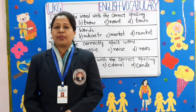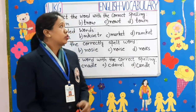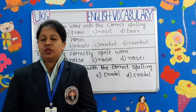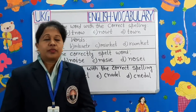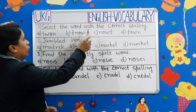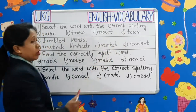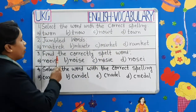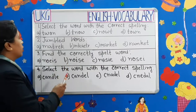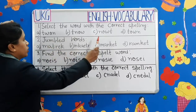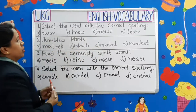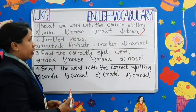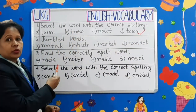For example, I have put up some questions on the board. So, let's start. Question number 1: Select the word with the correct spelling. Children, four options are given. You have to select the correct spelling. Which one is the correct answer? Yes — T-O-W-N, Town. So, we will put a tick on it.